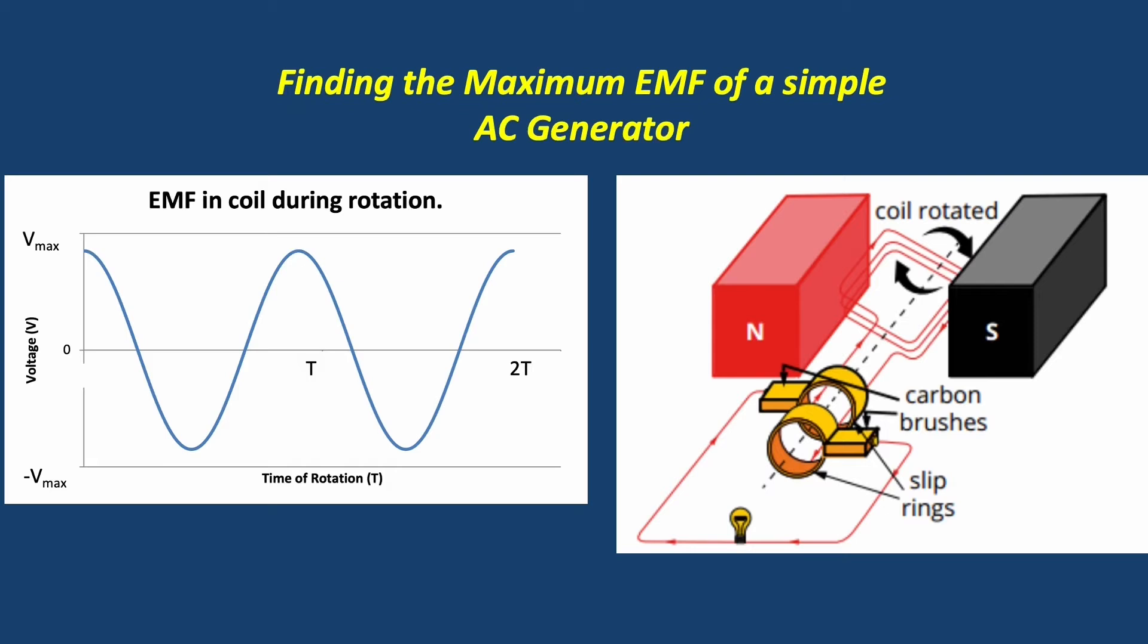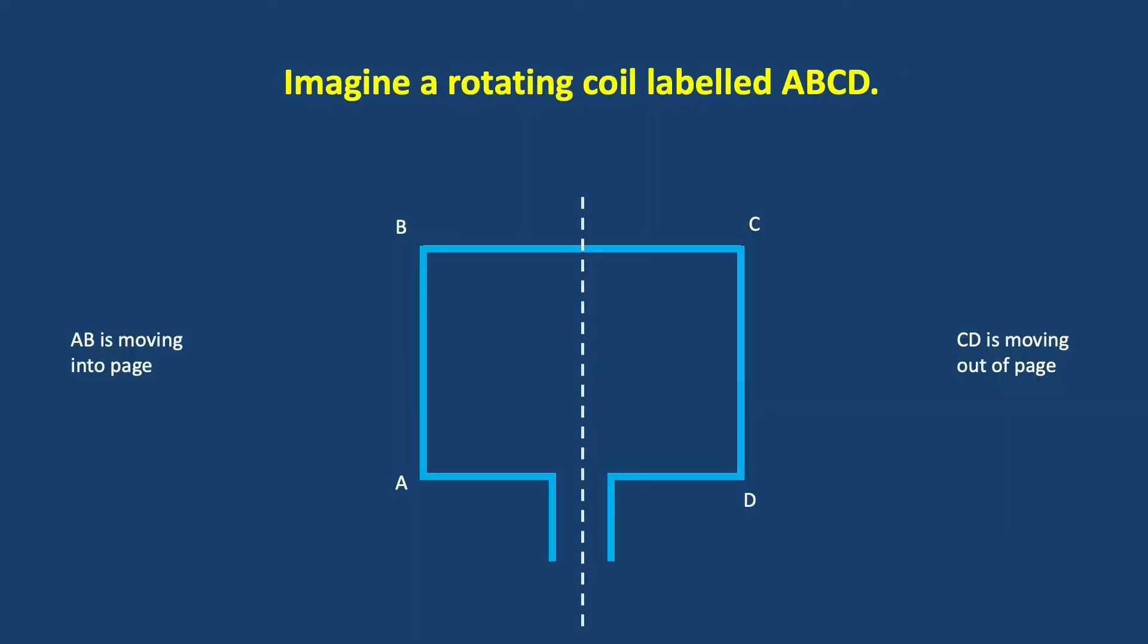It's important to notice here that the minimum voltage is along the zero line in our graph. Let's begin by imagining a rotating coil labeled ABCD. In this image, I want you to imagine that AB is moving into the page, and CD is moving out of the page.